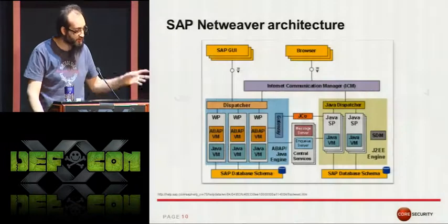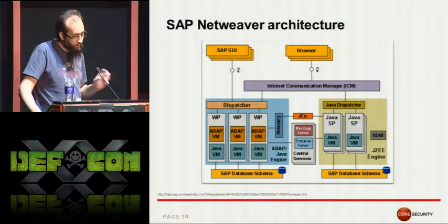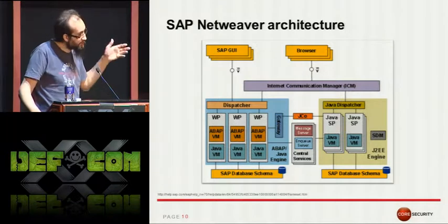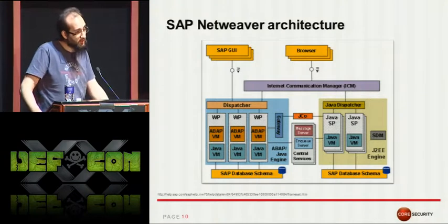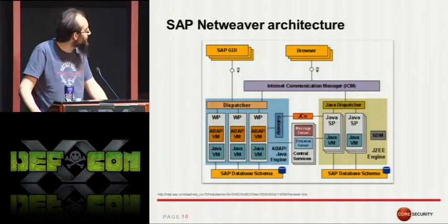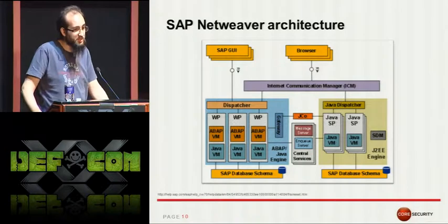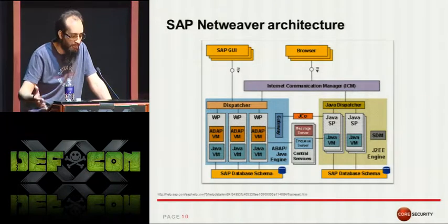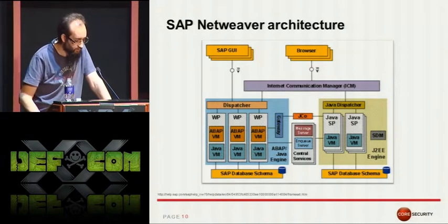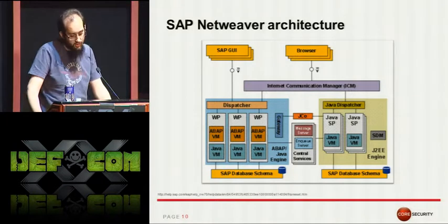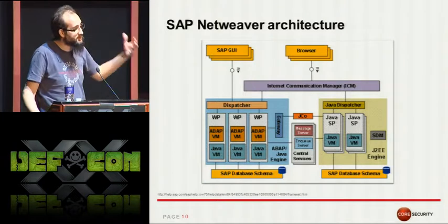The NetWeaver architecture is the infrastructure layer where all SAP applications run, and it's based on a three-tier layer. In the presentation layer there is the SAP GUI client, which is a fat client desktop application, and a browser for accessing SAP web applications. The database layer is independent, so you can use any commercial database product. In the business layer, there are two main different versions of NetWeaver — one based on Java and the other based on ABAP. This talk is mostly focused on the ABAP engine and the SAP GUI client, which are the components that use the DIAG protocol.